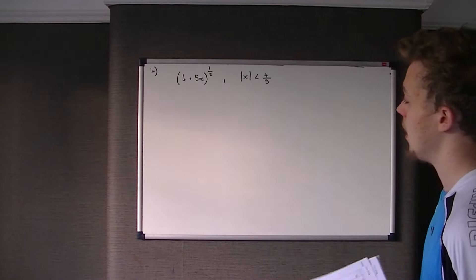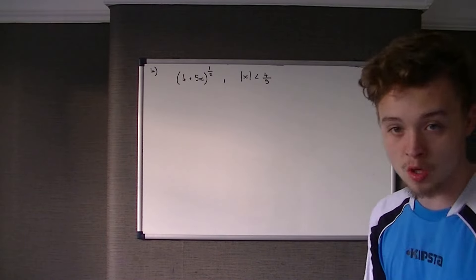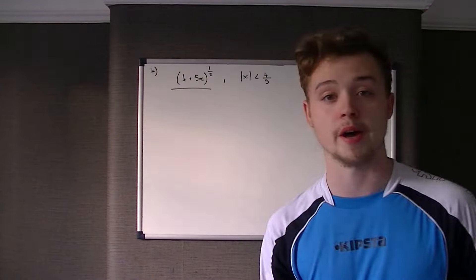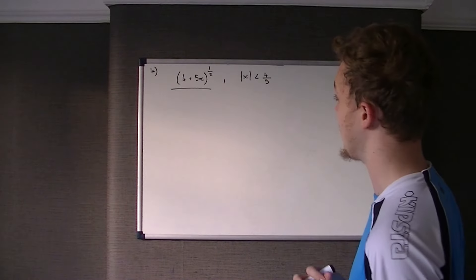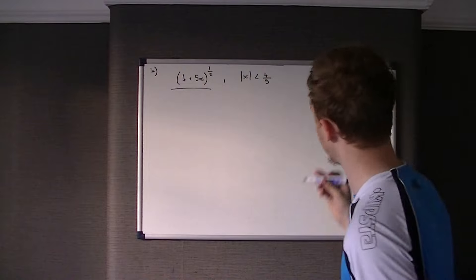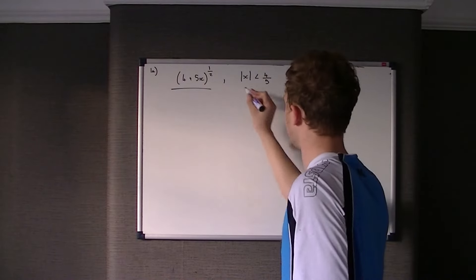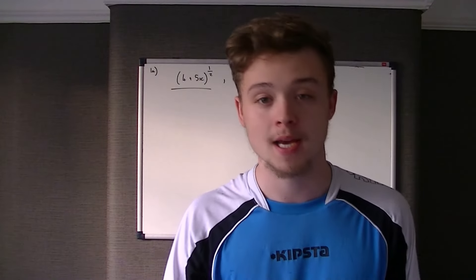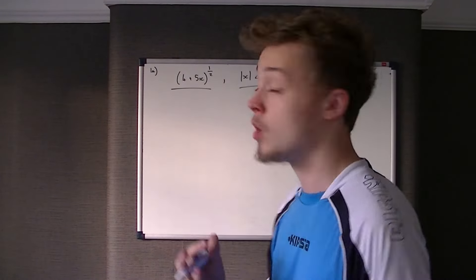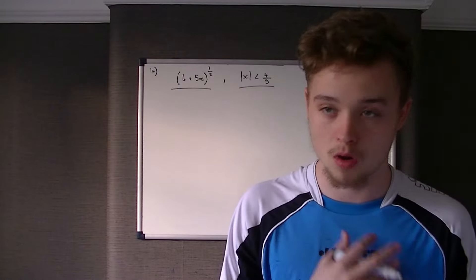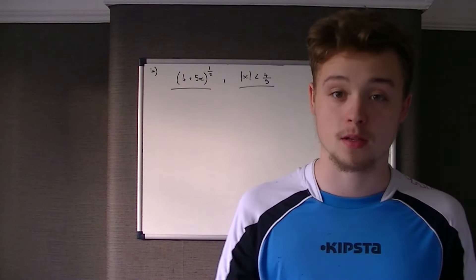This is question 1. We're told that f(x) is 4 plus 5x all to the power of a half — in other words, all square root. We're also told that the modulus of x is less than 4 fifths, meaning x is between plus or minus 4 fifths.